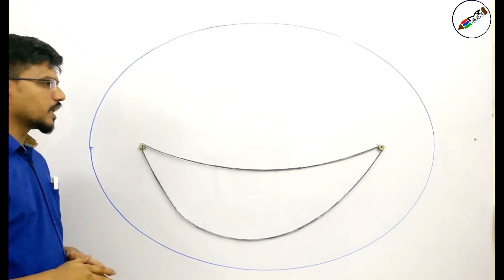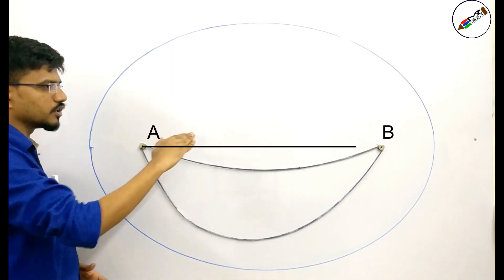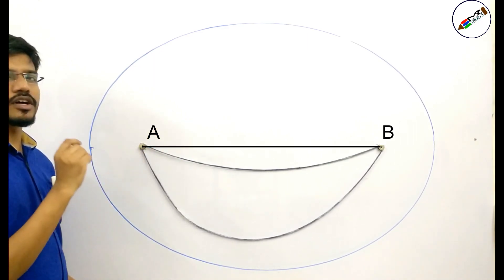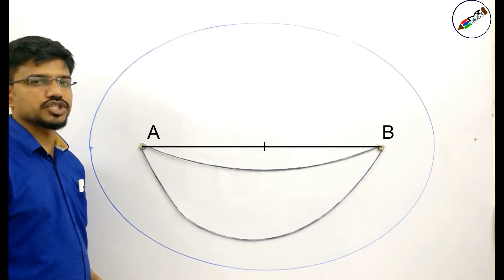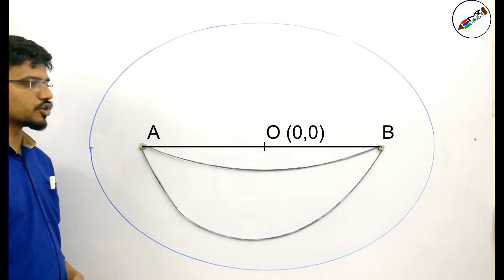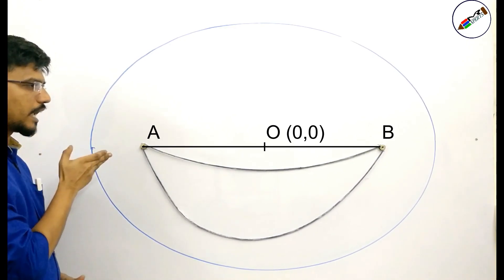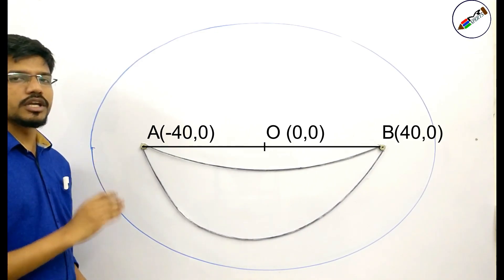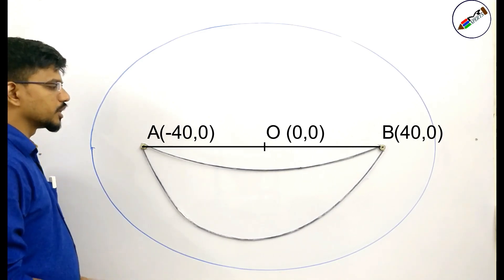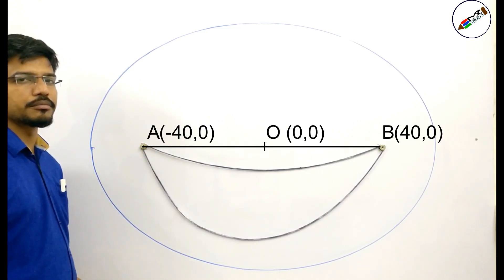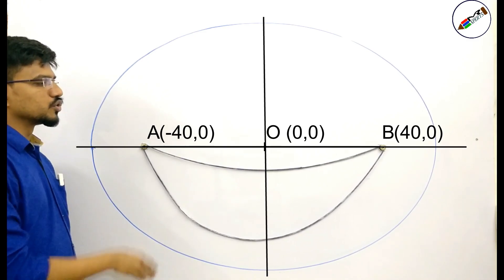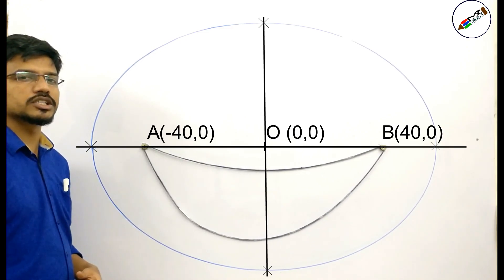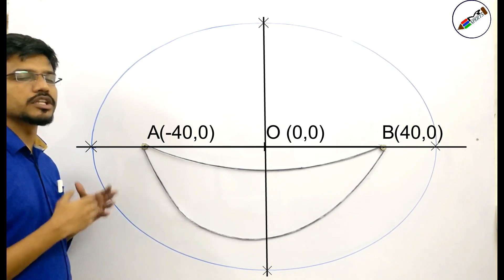Let us pass a horizontal line through points A and B. We have a line segment AB — let us consider its midpoint as the origin, and call that point O at (0, 0). According to that, point A will be at (−40, 0) and point B will be at (40, 0), because the distance between A and B was 80 centimetres. Let us draw a y-axis through the origin. Now let us try to get an equation for the given locus and tie it with our diagram.